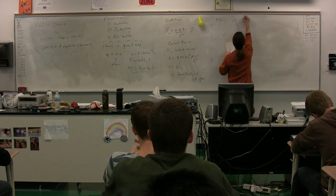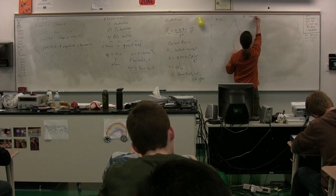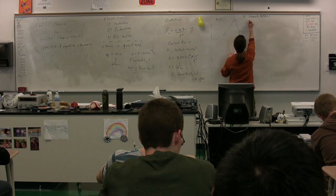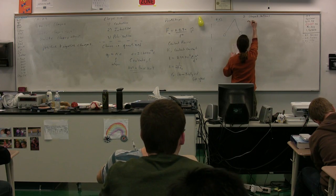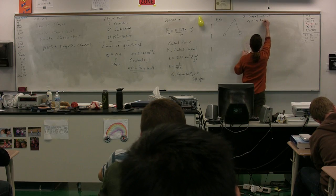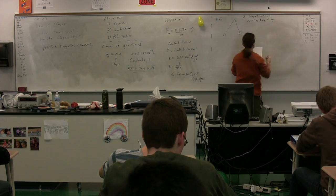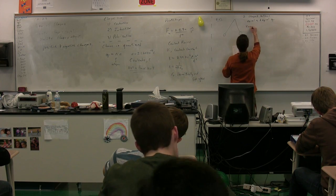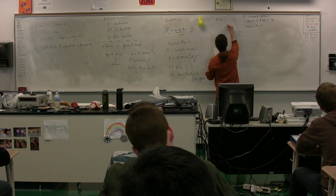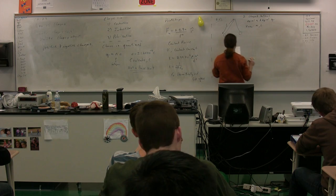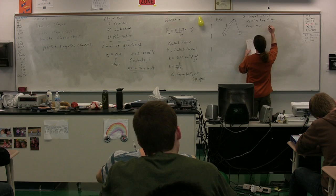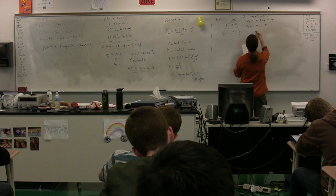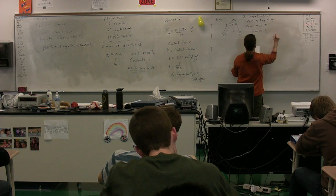So we have two balloons — two charged balloons — and they are going to be two equally charged, so they're going to have equal mass and equal charge. We're going to know the mass, the length L, which is just going to be from the very top, and theta, where theta is the angle, and we're trying to find Q.